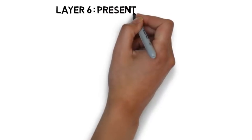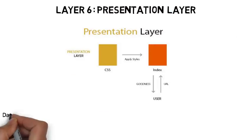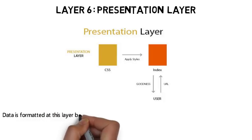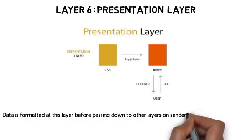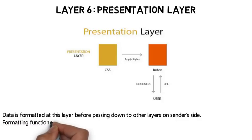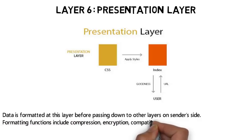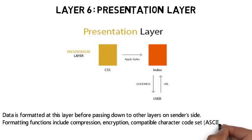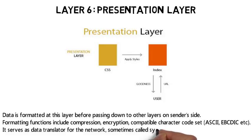Layer 6 is the Presentation Layer. Data is formatted at this layer before passing down to other layers on the sender's side. Formatting functions include compression, encryption, and compatible character code sets. It serves as a data translator for the network and is sometimes called the syntax layer.